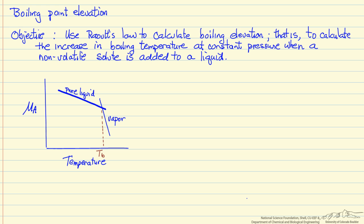In this video, we're going to look at how to calculate boiling point elevation, namely when we add a solid to a liquid, we raise the boiling point of the liquid. We're going to use Raoult's Law to calculate this elevation, assuming the solid has no vapor pressure.